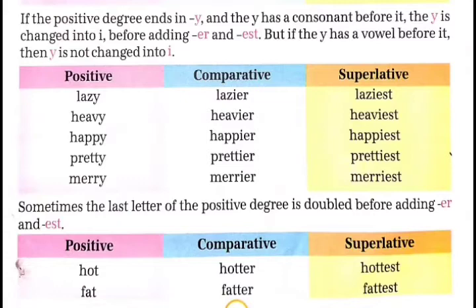यहां पर भी positive, comparative, superlative degree के कुछ examples: lazy, lazier, laziest; heavy, heavier, heaviest; happy, happier, happiest; pretty, prettier, prettiest; merry, merrier, merriest.